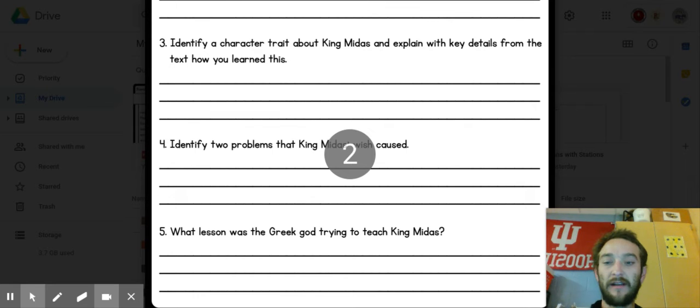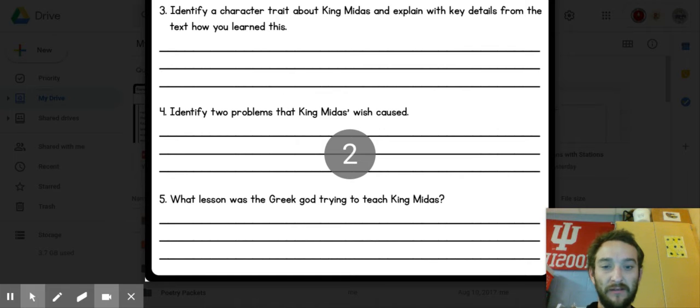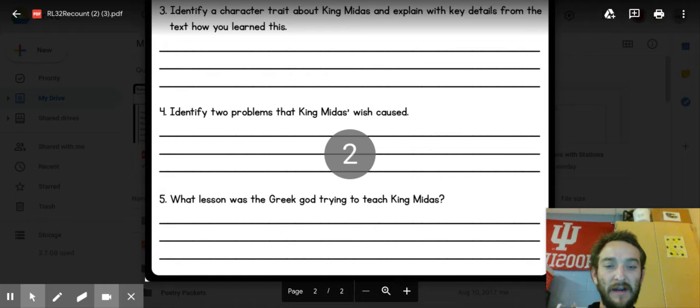And then number four, identify two problems that King Midas wished cause. So you might say something like King Midas's wish caused blank and blank. That would be a good restate for that one.